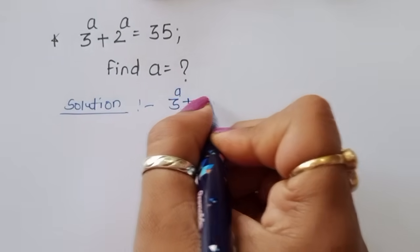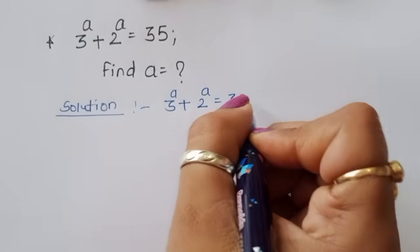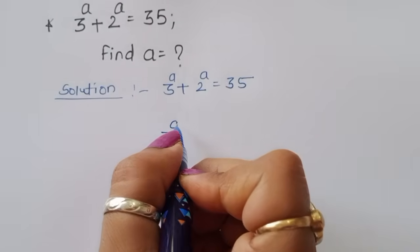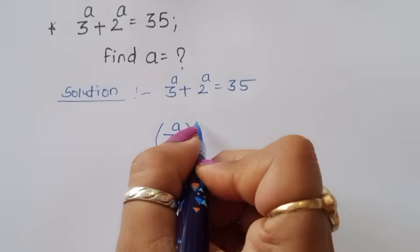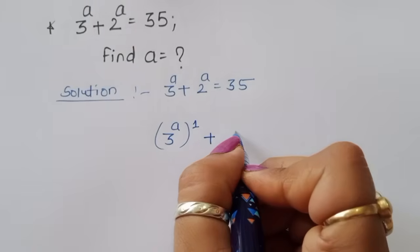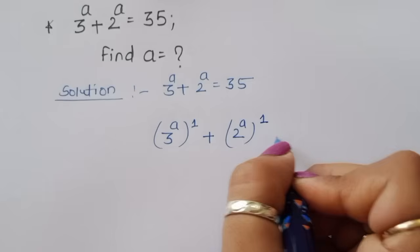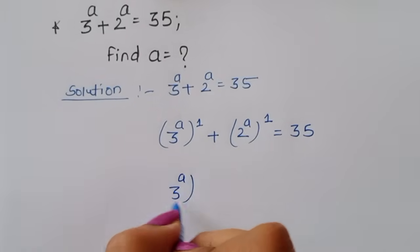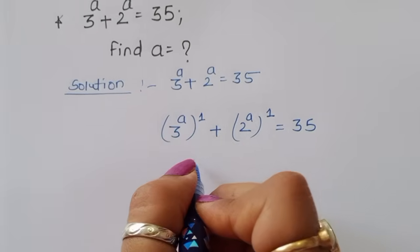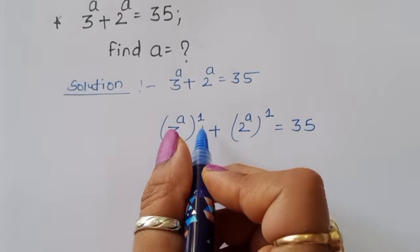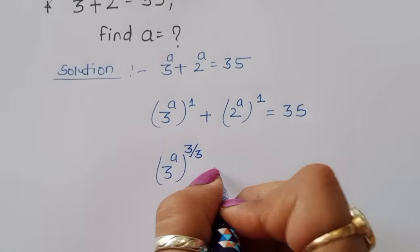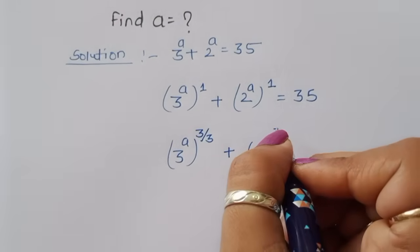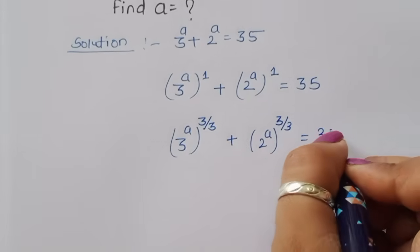We start with 3^A + 2^A = 35. We can rewrite 3^A as 3^(A×1) and similarly 2^A as 2^(A×1). The value remains the same. Now we can write the exponent 1 as 3/3, so the expression becomes 3^(A×(3/3)) + 2^(A×(3/3)) = 35.